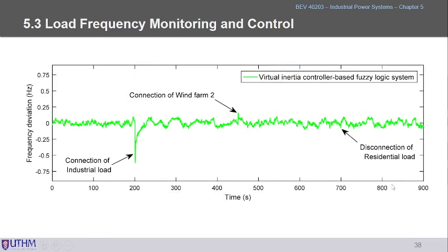Using the wind farm example, this graph shows frequency deviation from 50 Hz. The frequency is always fluctuating. When additional large loads are connected, frequency drops in that moment, but it will be adjusted because supply from TNB depends on our demand.